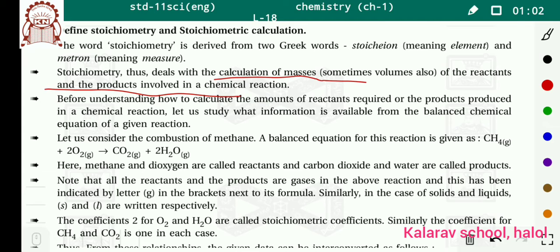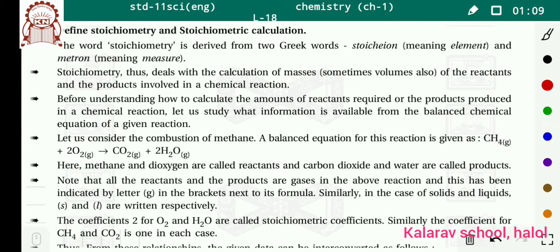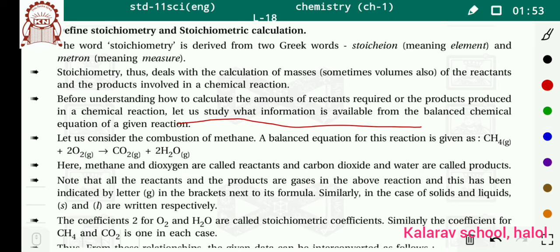First of all, aapko pata hona chahiye ki reactant kise bolte hain aur product kise bolte hain. Jo compounds ke beech mein chemical reaction ho raha hai, unhe hum reactant bolenge. Aur us reaction se jo new compound form hogi, use hum product bolenge. Before understanding how to calculate the amount of reactant required and the product produced, let us study what information is available from the balanced chemical equation.